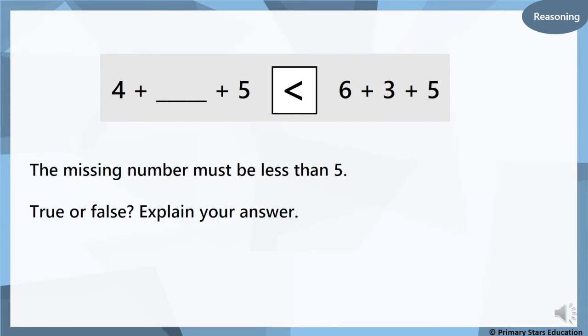4 add something add 5 is less than 6 add 3 add 5. Now this says the missing number must be less than five. Do you think that's true or false? Explain your answer. Now is the time to pause this. And you can discuss it with somebody else, you can try it out on a whiteboard. See if you can put a number in there and see if it makes sense or not. Pause it now and then come back and check your answer.